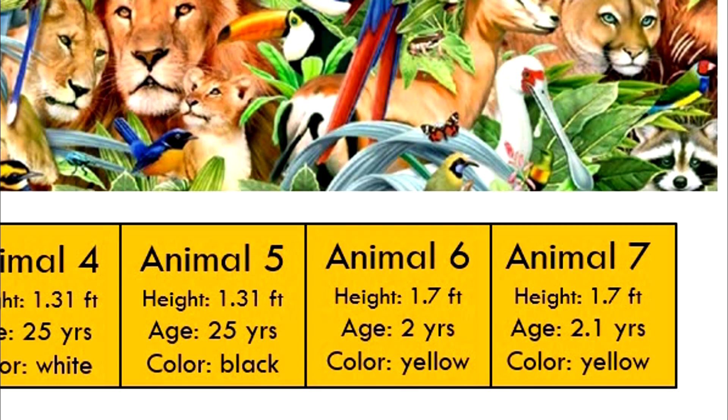Animal 6 has greater height than animal 5, and therefore, it is ordered after animal 5. As a side note, animal 6 is just 2 years old, compared to animal 5, that is 25 years old. It is much younger than animal 5.